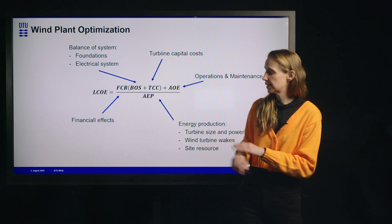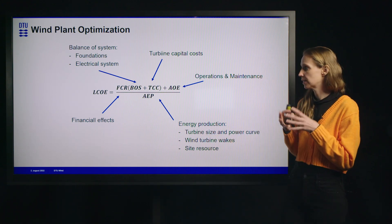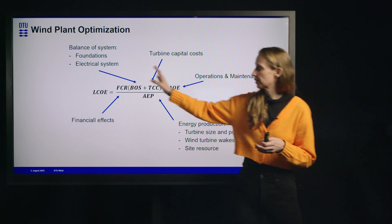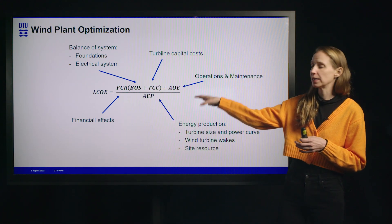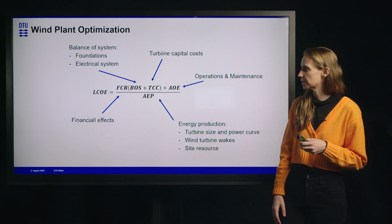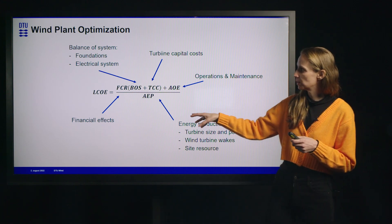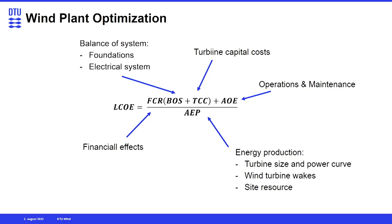LCOE is the metric we're trying to boil things down to. It's not the only such metric used in practice, but it's the one we'll focus on today. LCOE is nice because it includes the energy production side — energy produced means revenue from the farm — and that revenue needs to be balanced by all the costs: turbine costs, balance of system costs, operating costs, etc.